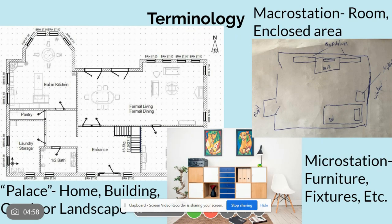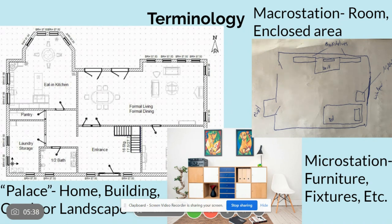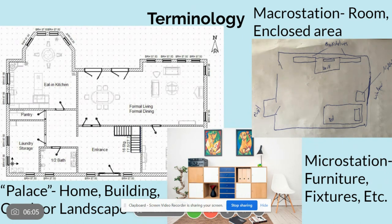A term you may have heard of is the memory palace — this is just lingo that means any scene, real, digital, or imaginary, that you can picture when you close your eyes. It's also known as the method of loci. We generally prefer real scenes, such as your house or a building you've actually been in, because it's likely to be stronger and more vivid in memory. There are also macro stations, which are the rooms or separate areas within the palace, and micro stations, which are specific points that stand out within those macro stations, such as furniture and light fixtures.